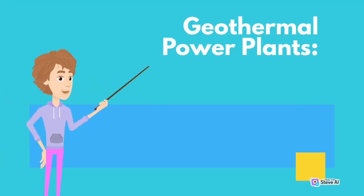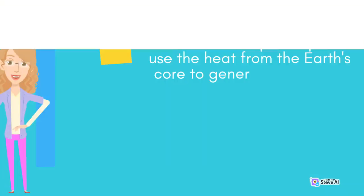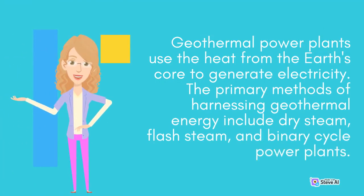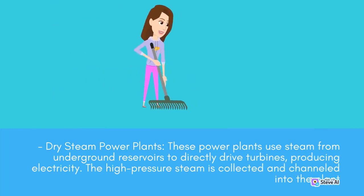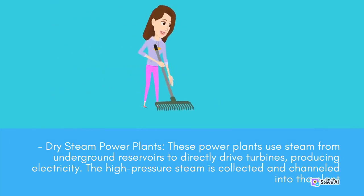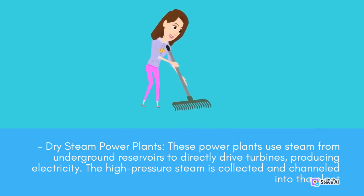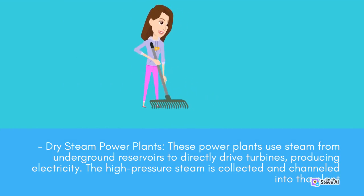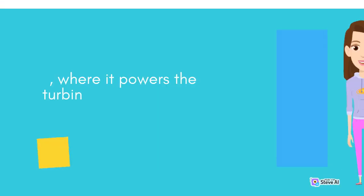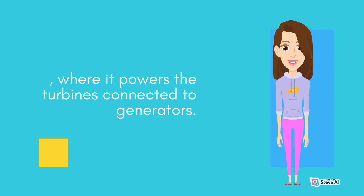Geothermal power plants use the heat from the Earth's core to generate electricity. The primary methods of harnessing geothermal energy include dry steam, flash steam, and binary cycle power plants. Dry steam power plants use steam from underground reservoirs to directly drive turbines, producing electricity. The high-pressure steam is collected and channeled into the plant, where it powers the turbines connected to generators.